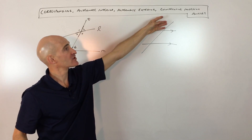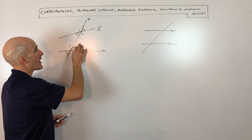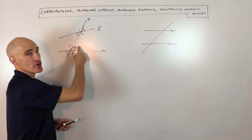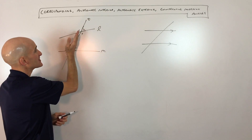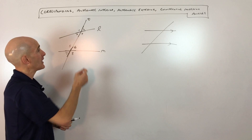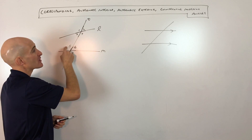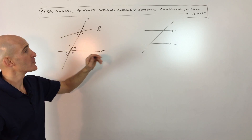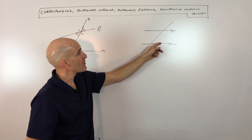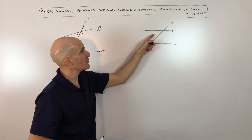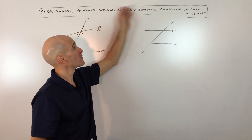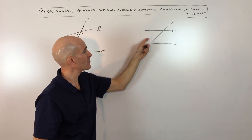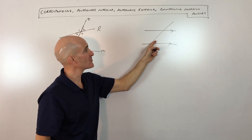Now the last one we're going to talk about is consecutive interior angles. Consecutive means one after another; interior means in between. So 4 and 6 are consecutive interior — sometimes referred to as same-side interior because they're on the same side of the transversal. And 3 and 5 are also consecutive interior. Now consecutive interior angles are kind of the oddball of the group in the sense that when these lines are parallel, the consecutive interior angles are not equal like the others — they're supplementary, meaning they add up to 180 degrees.